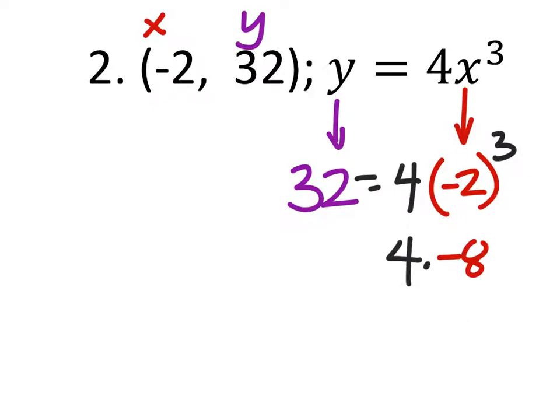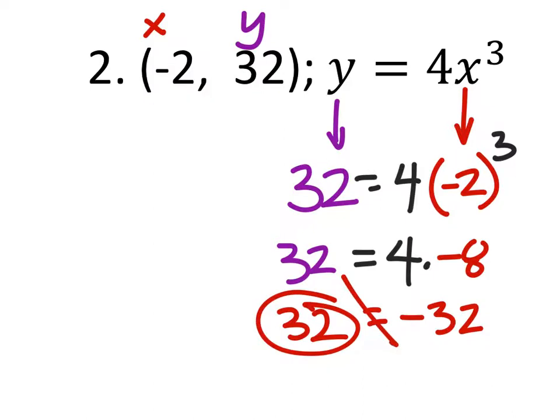And then we would multiply that by the 4. Again, we're seeing if this equals 32. And 4 times negative 8 is negative 32. That's a positive 32 right there, so this is false. So this is no.